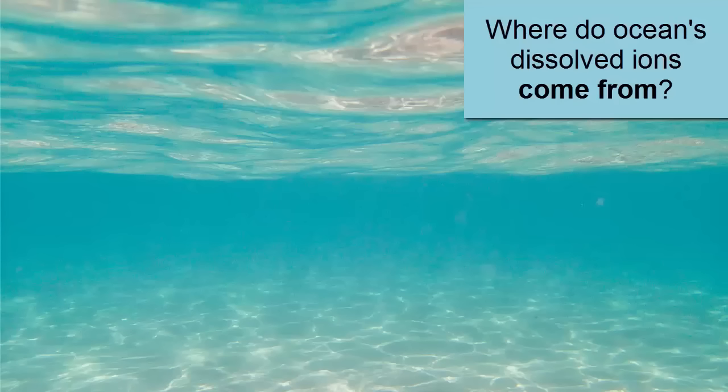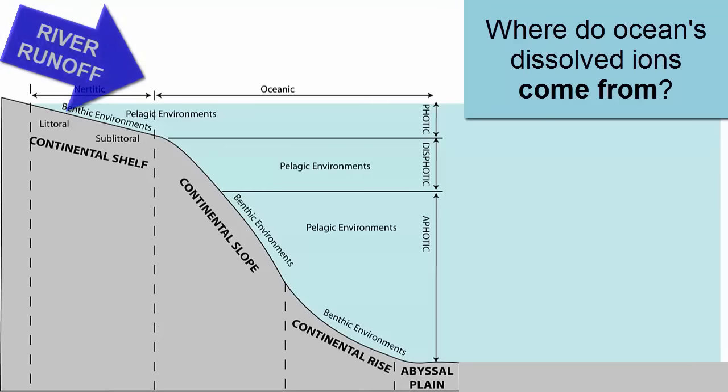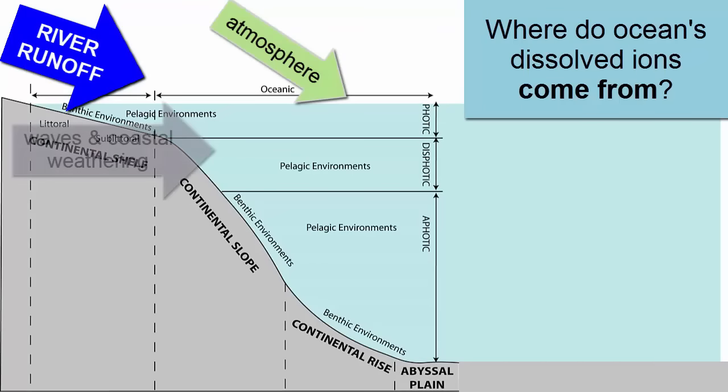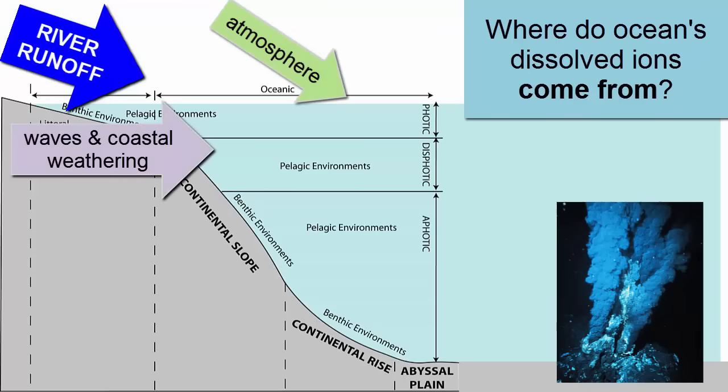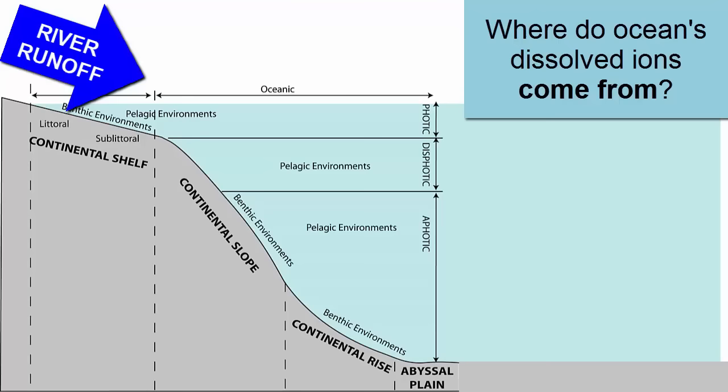So where do ions in the oceans come from? The primary source is rivers. Secondary sources include atmospheric droplets of acid rain, waves weathering coastal rocks, and hydrothermal circulation at seafloor spreading centers. Of these, the primary source is rivers.